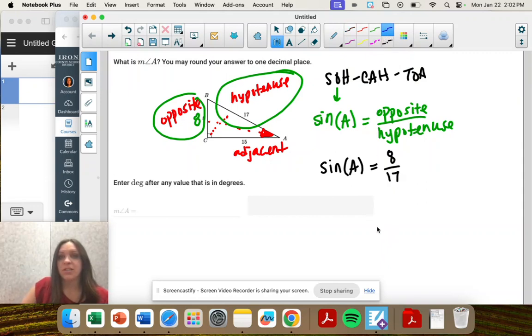So the goal here is to get A by itself. So we have to remove sine. That is the goal. To remove it, we take the opposite.